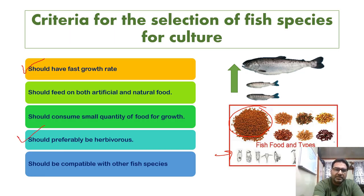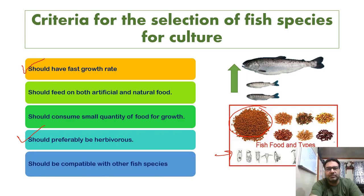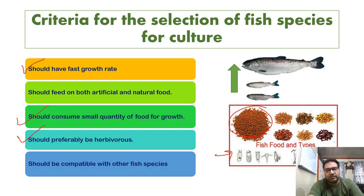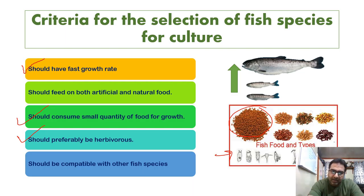Another criterion is that the fish should ideally be herbivorous. Herbivorous fish are more efficient because they require less energy input and can convert a small quantity of plant-based food into growth, making them more cost-effective and beneficial for culture.